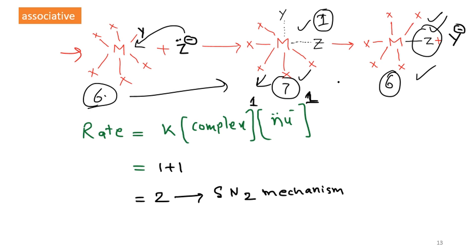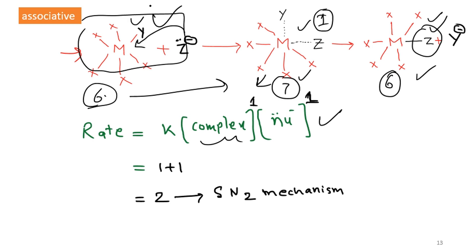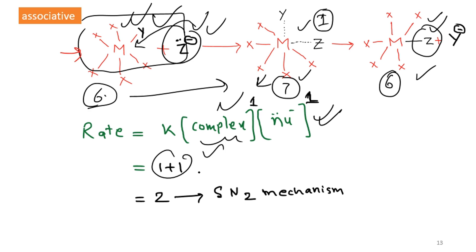When we calculate the rate for the associative reaction, it depends on both the complex and the nucleophile. There are two reactants: the attacking nucleophilic reagent and the complex. This makes it a second-order reaction, following an SN2 mechanism. These are the associative and dissociative mechanisms in octahedral complexes.